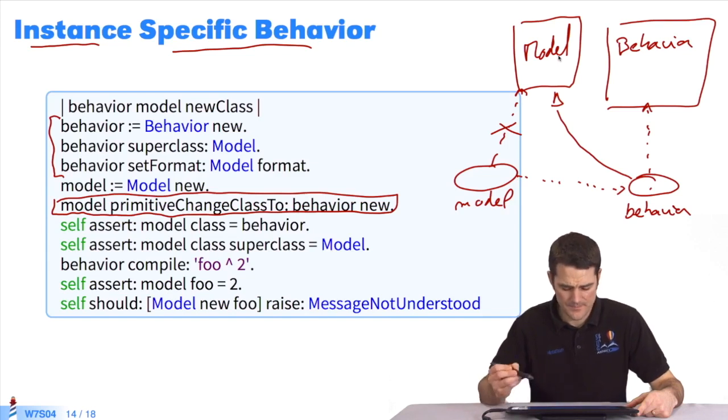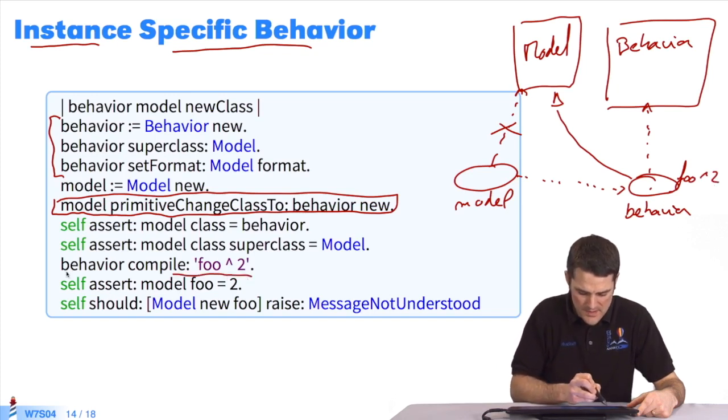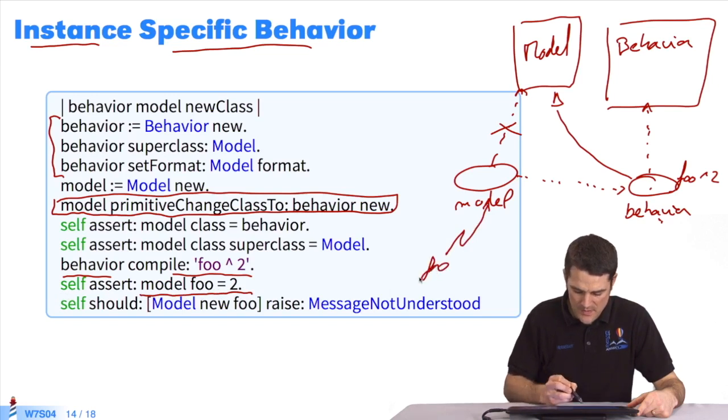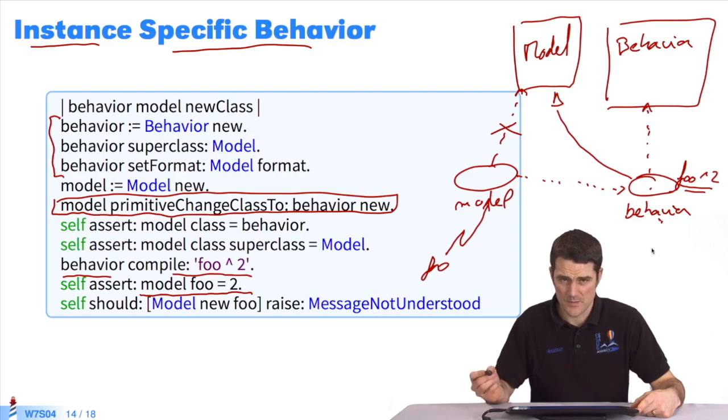This is a subclass of model class. Now I can compile a new method in this class. I compile with the method foo, which returns 2. I'm doing this in the object behavior. As we can see here, if I send the message foo to the object model over here, like this, it will return 2. This follows the lookup method. I send the foo message. The object model searches for the method in its class, the object behavior, and successfully finds the method. It works perfectly.